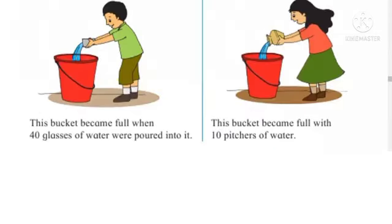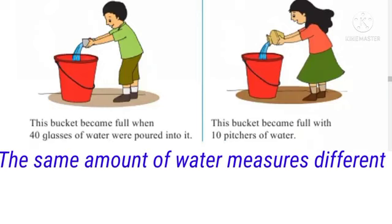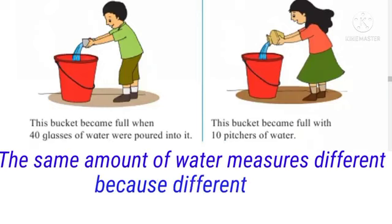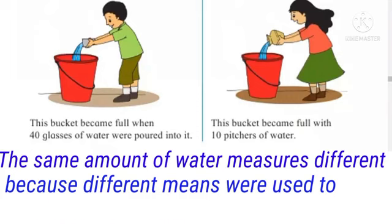Now in this picture, the boy's bucket became full when 40 glasses of water were poured into it and the girl's bucket became full with 10 pitchers of water as you can see. From this, we come to know the same amount of water measures different because different means were used to measure it as the size of the bucket is the same.